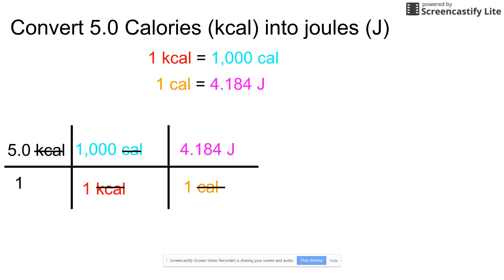Cancel your units at every step to make sure that you set it up correctly. So calories, you're multiplying by calories divided by calories, those cancel. Then you're left with joules. You take 5, multiply it by 1,000, multiply it by 4.184. And then on the bottom, you just have 1. 1 times 1 times 1 is 1. If you do the computation in your calculator, it's 21,000 joules.